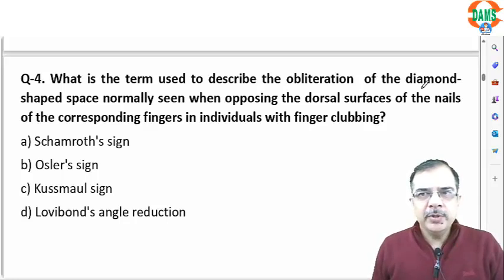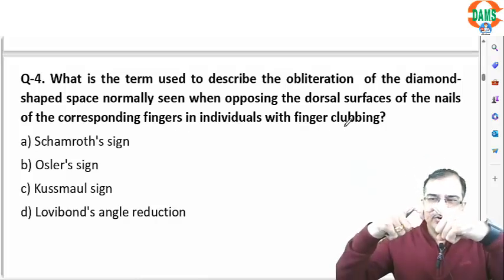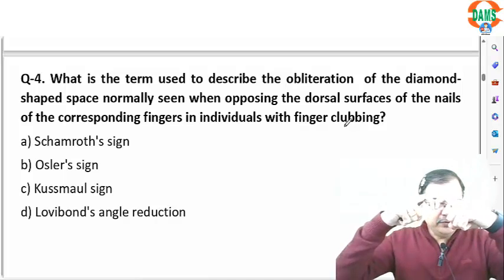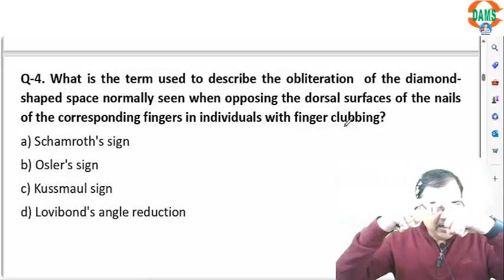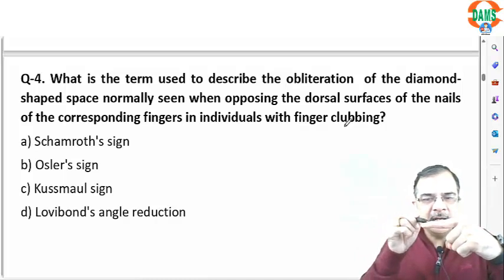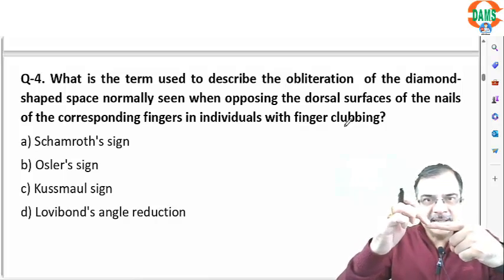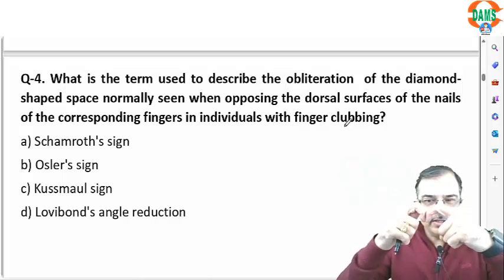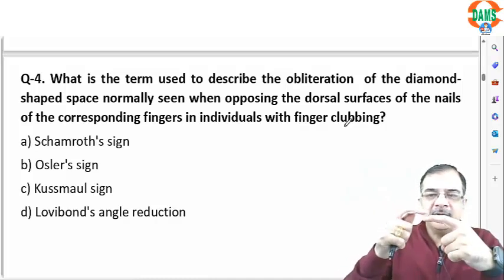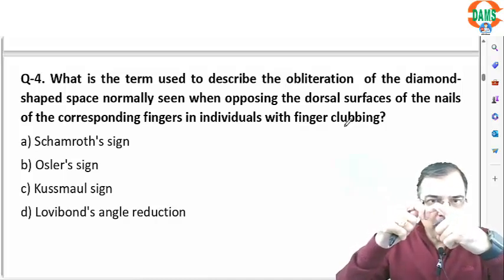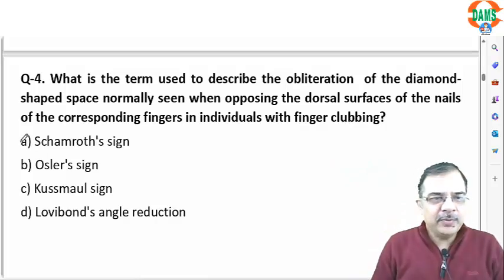Question 4: what is the term used to describe the obliteration of a diamond-shaped space normally seen when opposing the dorsal surface of nails in individuals with finger clubbing? Normally, when we oppose two fingers, we see a diamond-shaped window because the angle between the nail and the proximal part of the skin is less than 180 degrees. But if there is clubbing, that window is obliterated — this is known as Schamroth's sign.